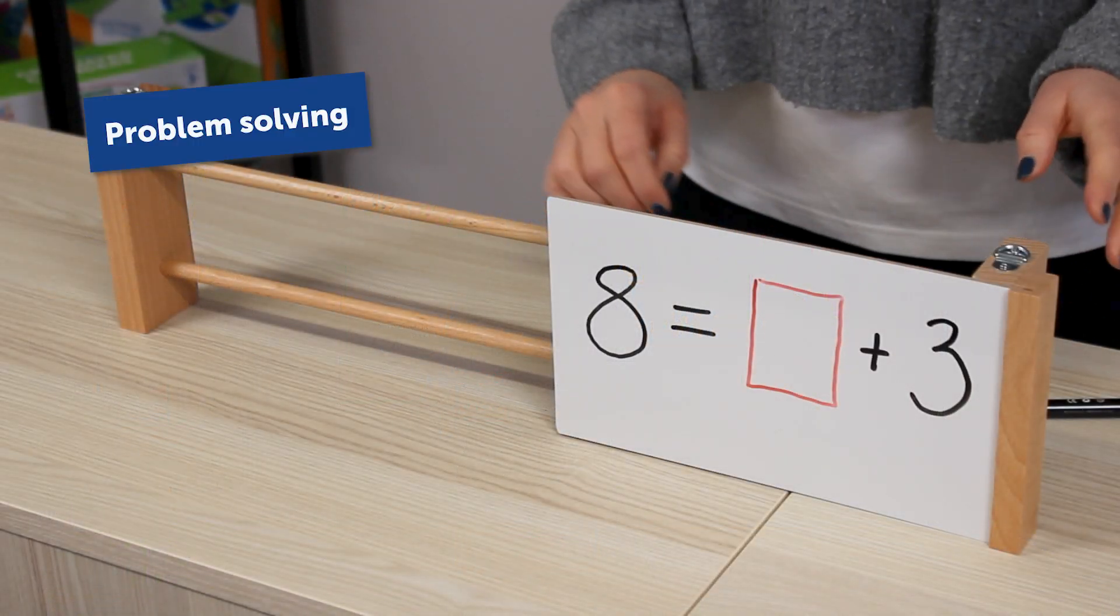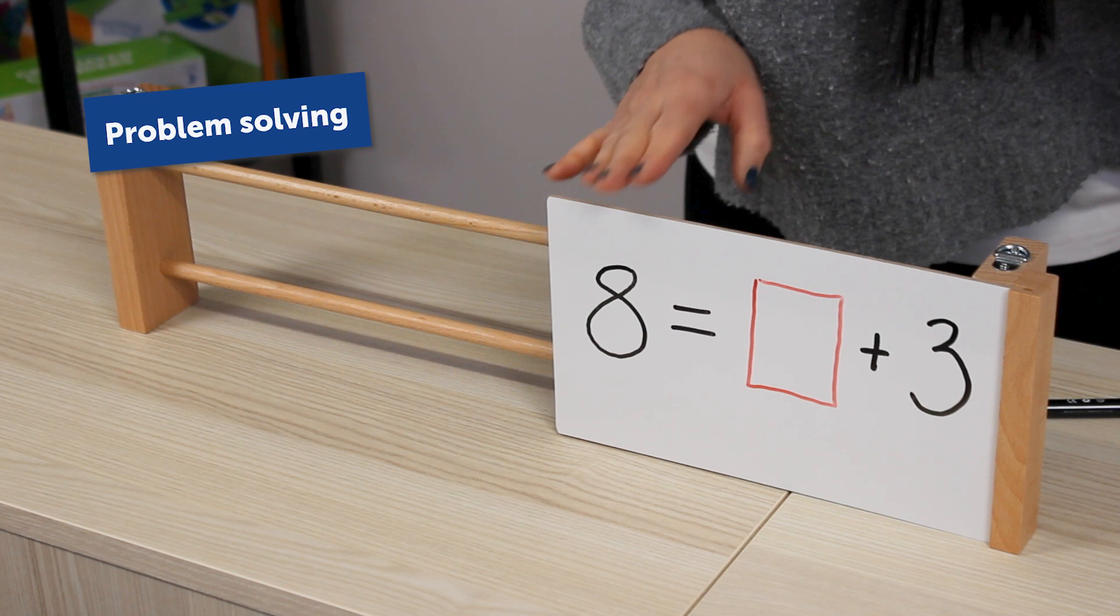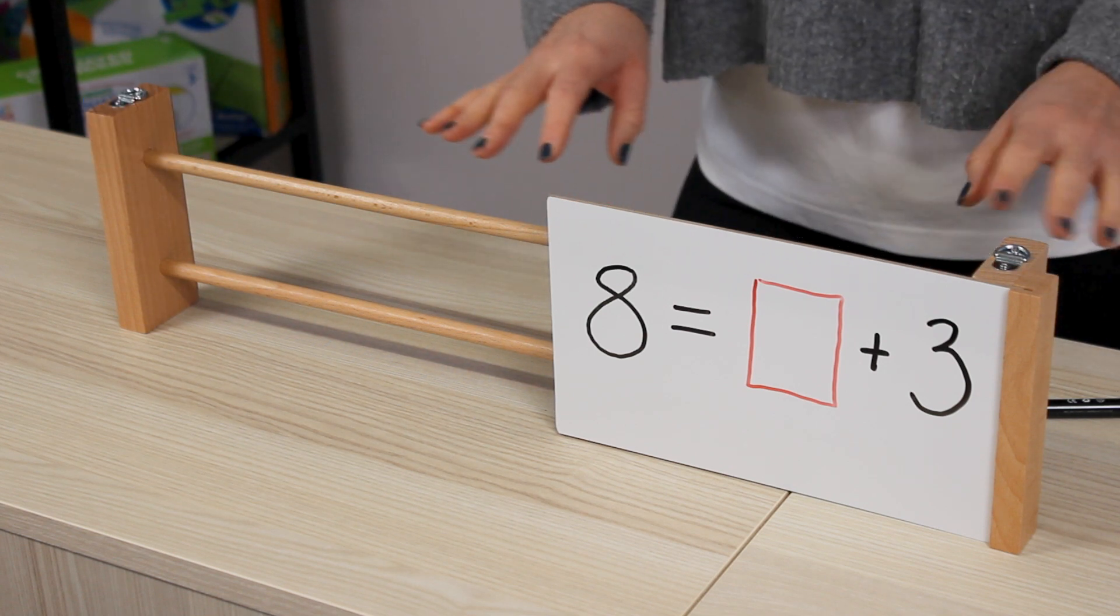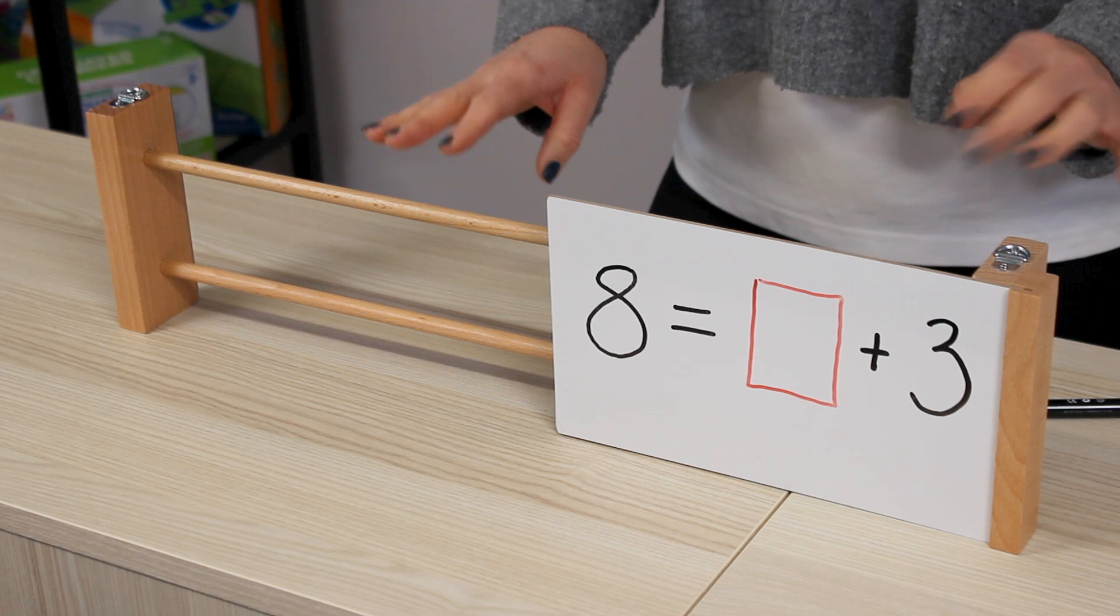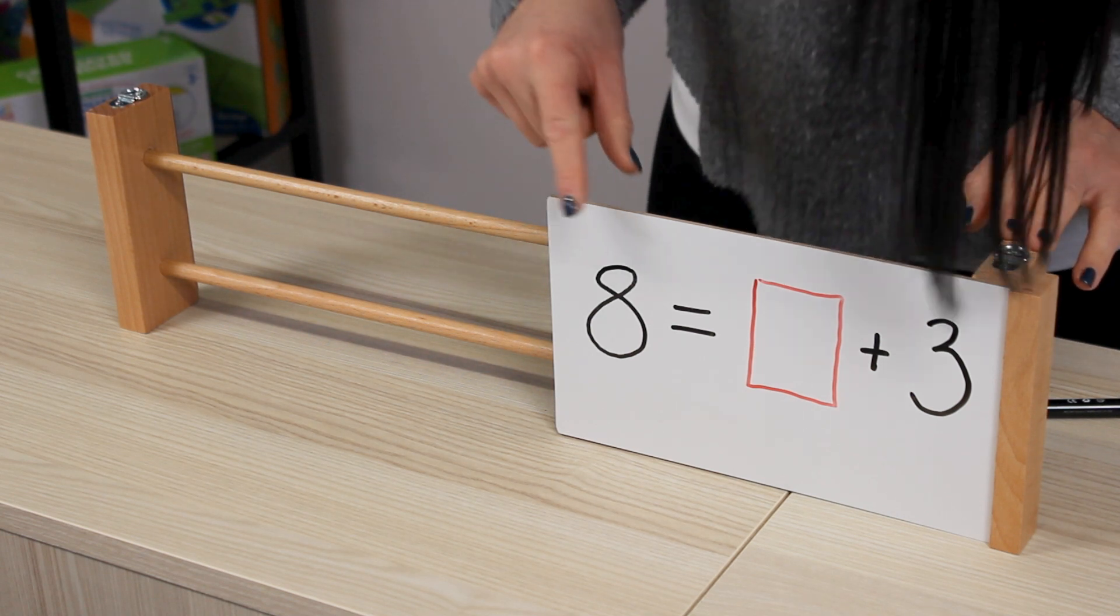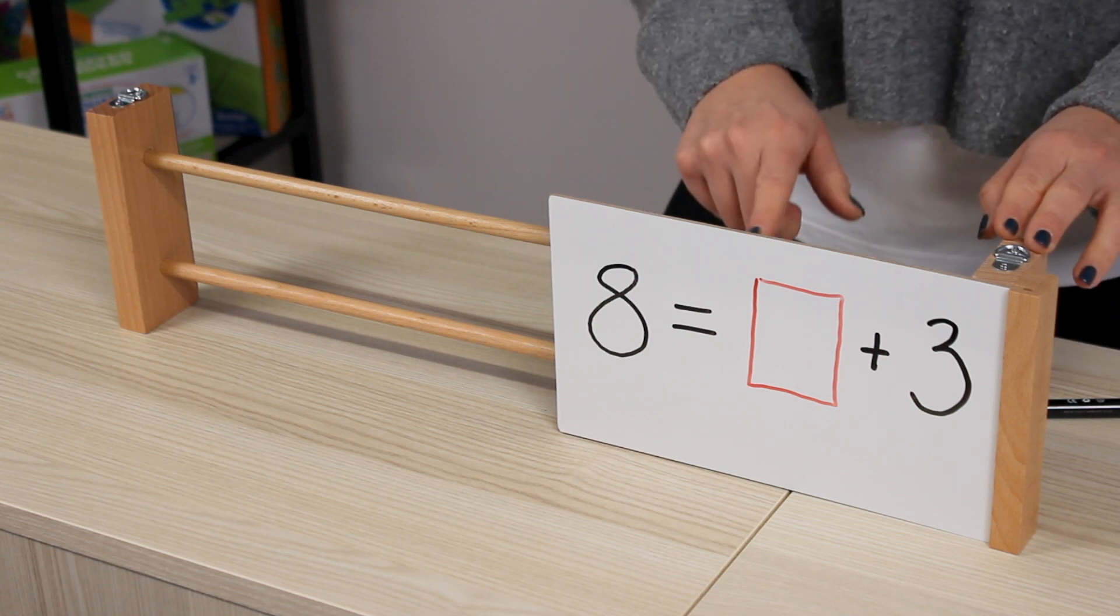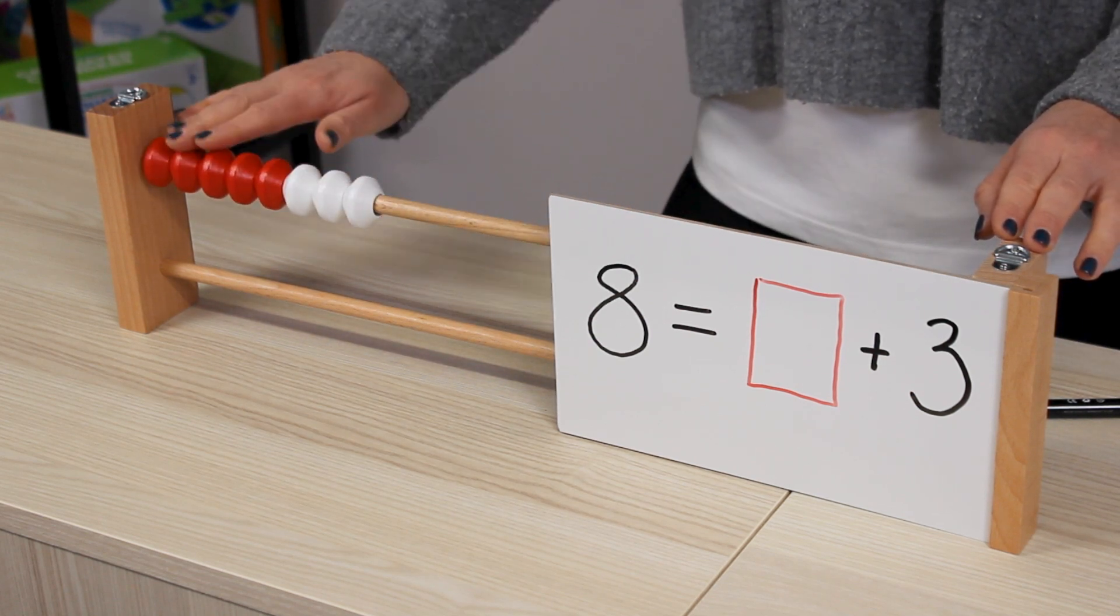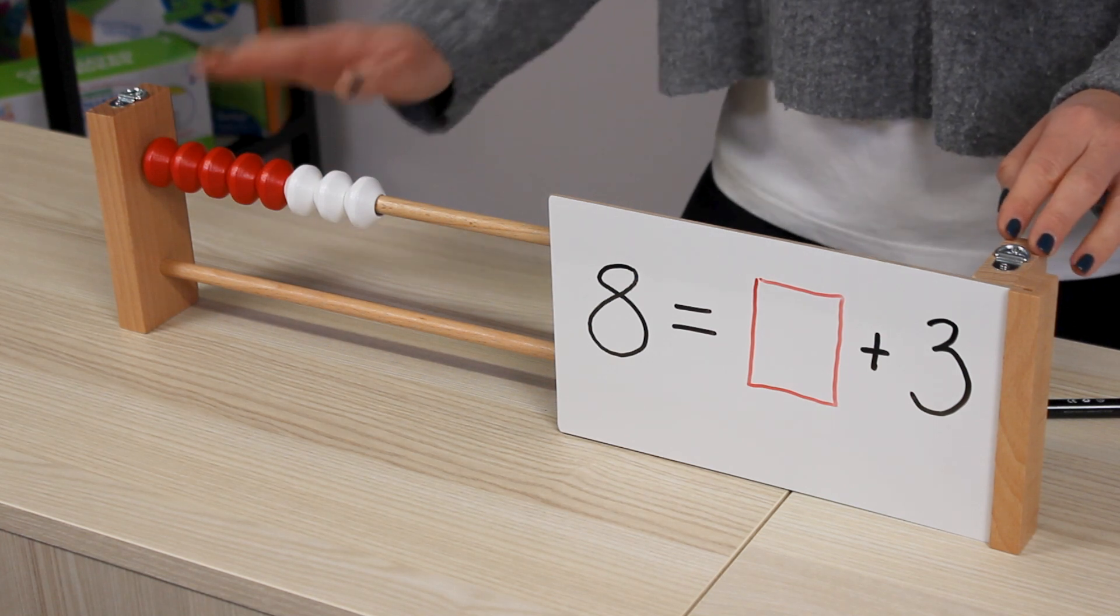If we take the missing number problem of 8 = ___ + 3 we're going to demonstrate to them first how they can do this so then they can explore others on their own. So first we want them to get that whole number our eight so we've got five six seven eight so that is our whole we know we are ending with eight.